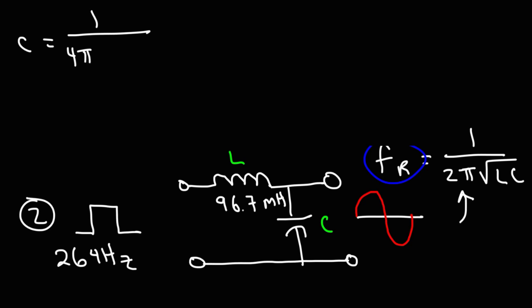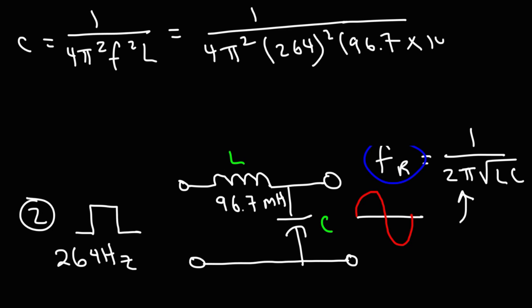C is 1 over 4π² times 264², times f², times L. So once you square both sides of this equation and then rearrange it to solve for C, you're going to get this equation here. So 1 over 4π² times 264² times an inductance value of 96.7 millihenry. So milli is 10 to the -3.